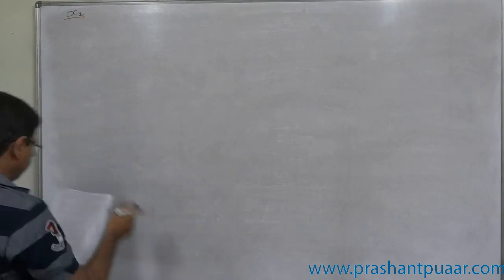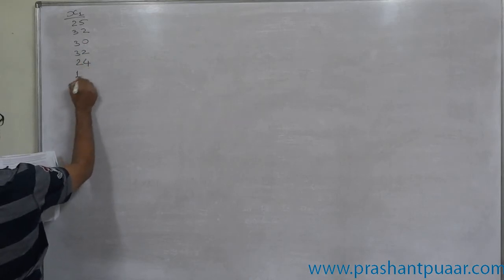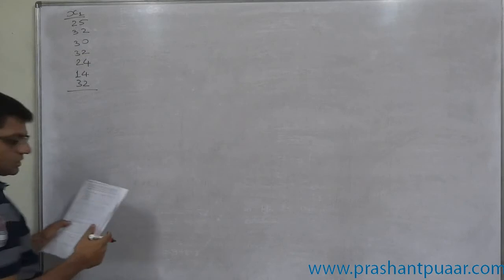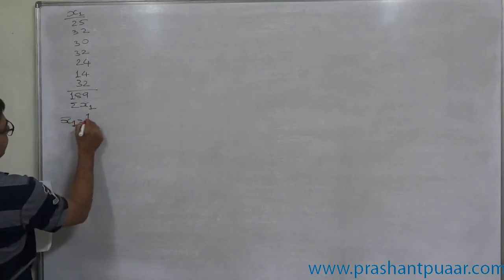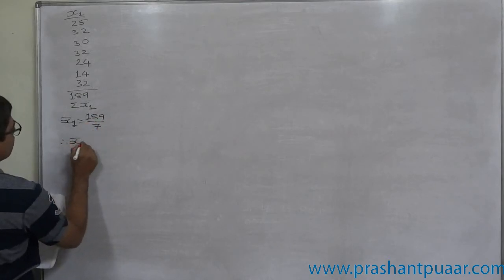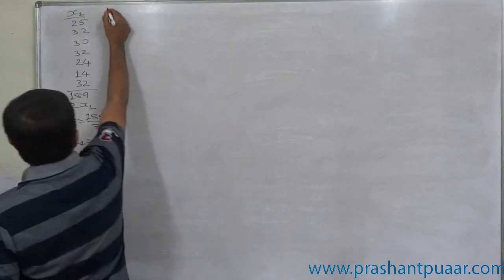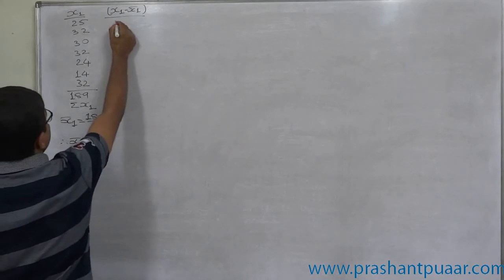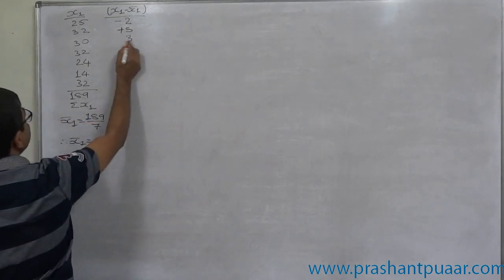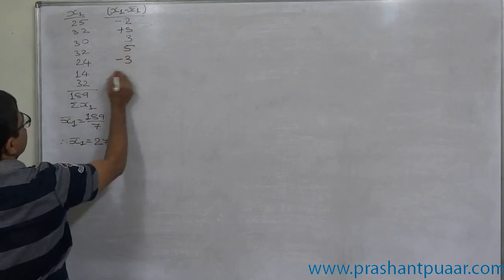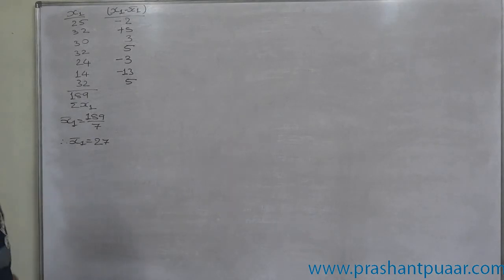Let us take diet X as x₁, or you can take it Y: 25, 32, 30, 32, 24, 14, and 32. The summation is 189, Σx̄₁, so x̄₁ comes to 189 divided by 7, so x̄₁ is 27. So we can subtract 27 and we can use the way of x₁ minus x̄₁: 25 minus 27 is minus 2, 32 minus 27 which is not minus but positive 5, positive 3, positive 5 again, negative 3, 14 means negative 13, and 32 means again positive 5.